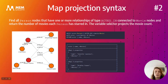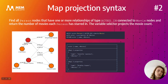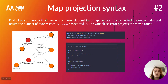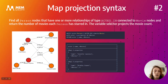Memgraph also supports map projection queries for building maps based on existing values. And if you look at this example, we have a really small graph and if we want to find out which actors acted in which movies, and then return the map of each actor with their name and the number of movies they acted in, we can create a map using the curly brackets.